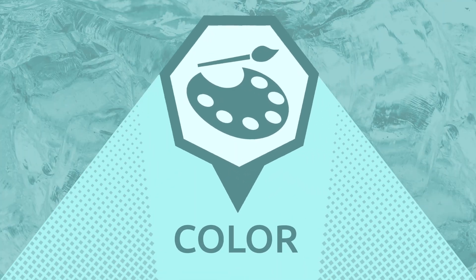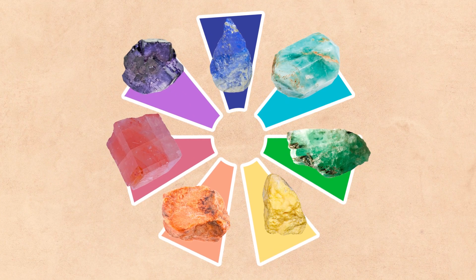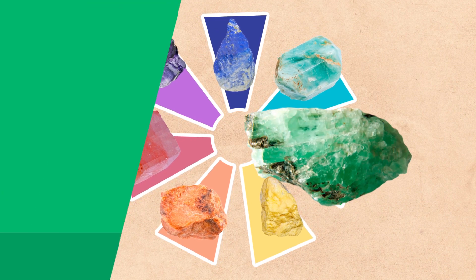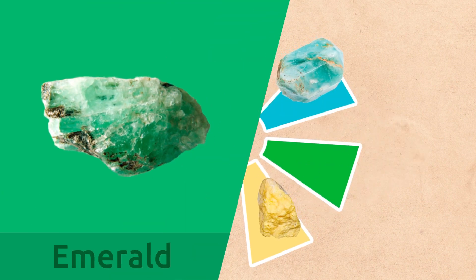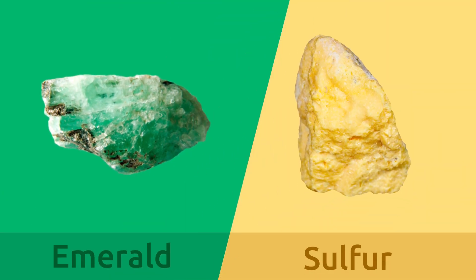Color — each mineral has a distinct color. Emeralds, for example, are green, while sulfur is yellow.